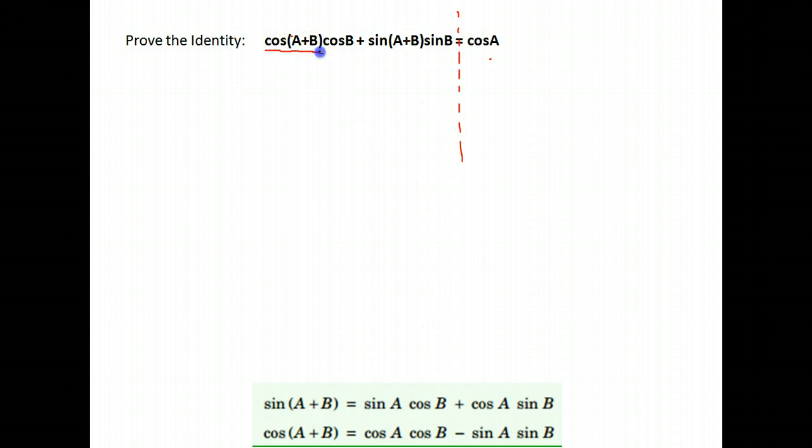We have an identity for the cosine of A plus B, or cosine of two angles added. It's cosine A cosine B minus sine A sine B. That whole thing was multiplied by cosine B. So I want to make sure I put parentheses around it. Plus, we have sine A plus B. We have an identity for that also. The sine of A plus B is sine A cosine B plus cosine A sine B. And that entire value was multiplied by sine B.